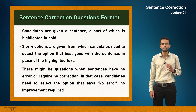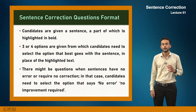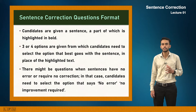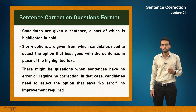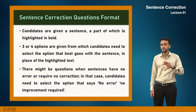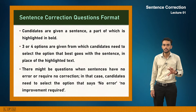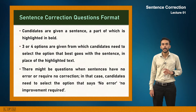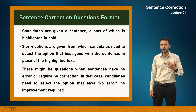Sentence correction is a vital part of your competitive exams — specifically the verbal ability section. You will be given a sentence where a part is highlighted in bold or underlined, and you have to choose the correct option to replace that part. There might also be a possibility that no change is required, in which case you choose the no error option. We will now discuss some of the different types of errors in sentence correction.